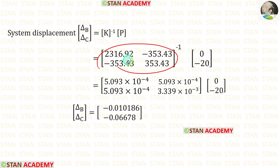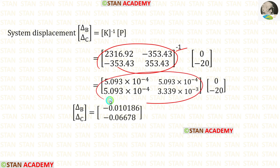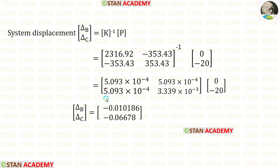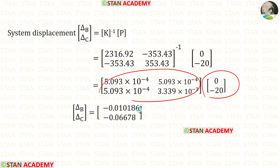For this matrix we need to find the inverse, which we can obtain using a calculator. If you do not know how to find the inverse using a calculator, see the link in the description below to watch a tutorial video. Using the calculator, we find the inverse and multiply the two matrices to obtain delta B and delta C.